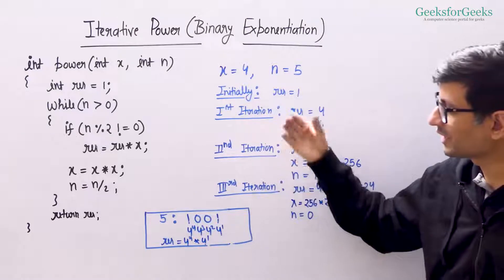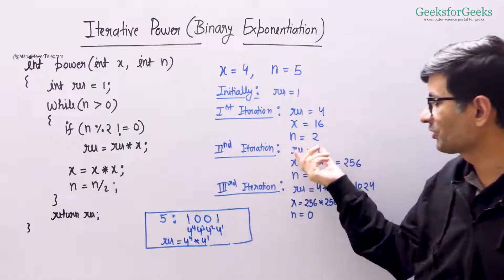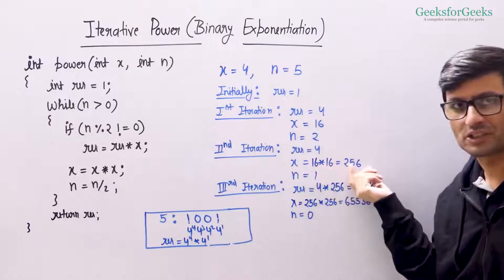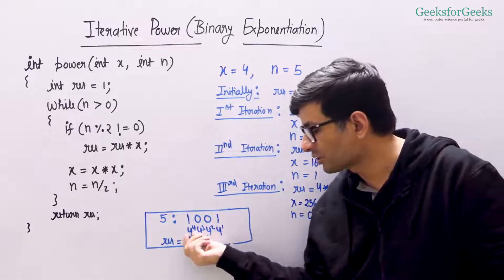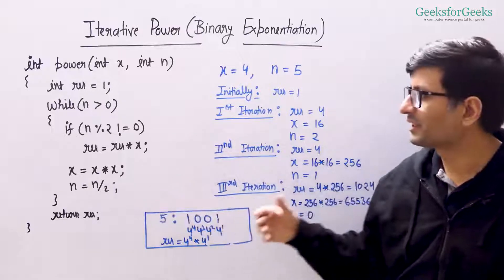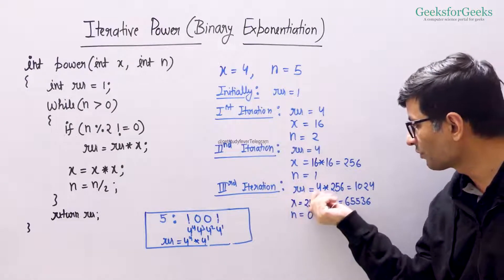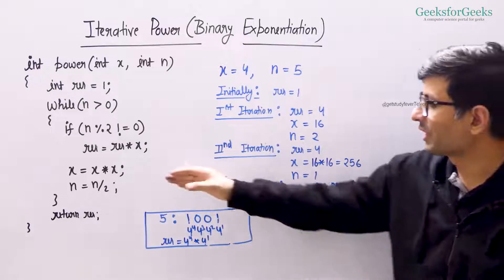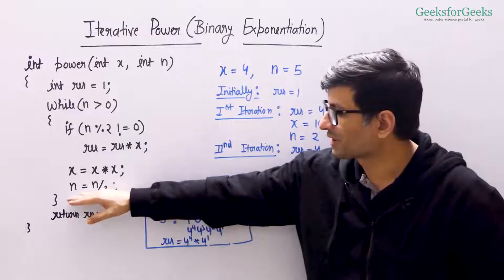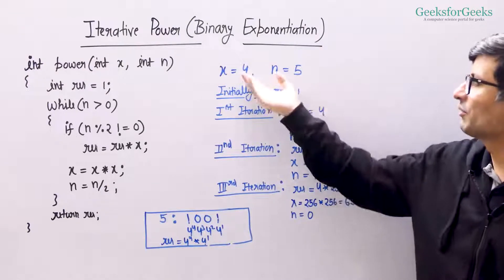In the second iteration, n is 2, which is even, so we do not go inside the condition — result remains 4. We do x equal to x squared, so x becomes 16 times 16 equals 256, which is 4 raised to the power 4. Then n becomes 1. In the third iteration, the condition is true, so result becomes 4 times 256 equals 1024. We do x equal to x squared again, though this value does not matter. n becomes 0, we exit the loop, and return 1024, which is 4 raised to the power 5.